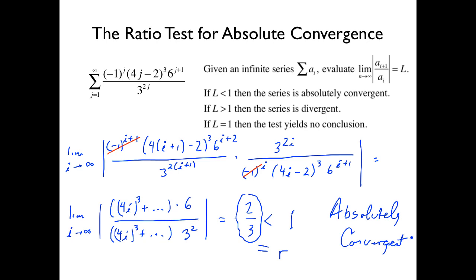Good question — we can't use the formula a over one minus r because when j is small the series could be very different from a geometric series with r of two-thirds. Those early terms could be totally different, so a over one minus r is off the table. We can only conclude convergence, not find the exact sum this way.